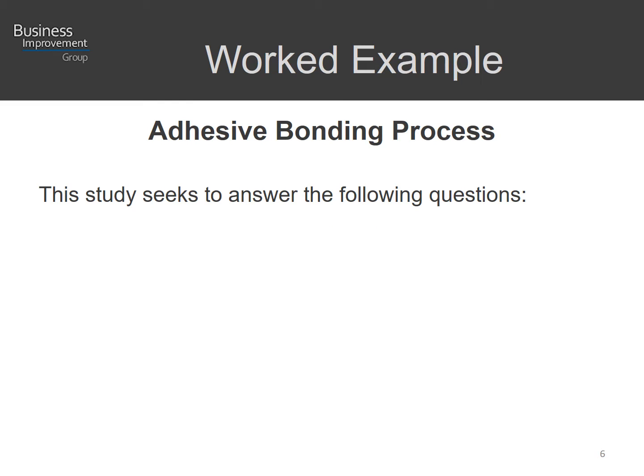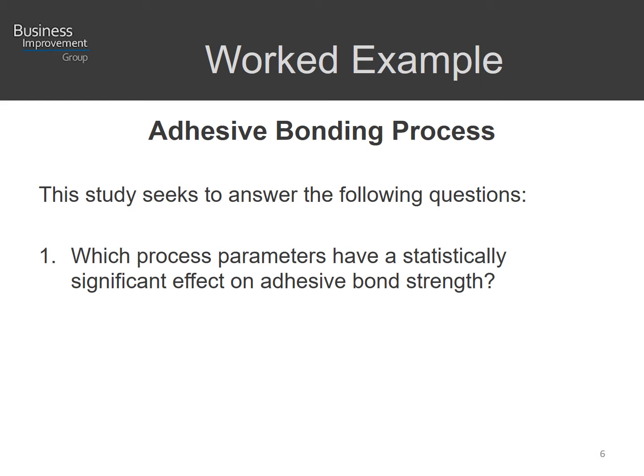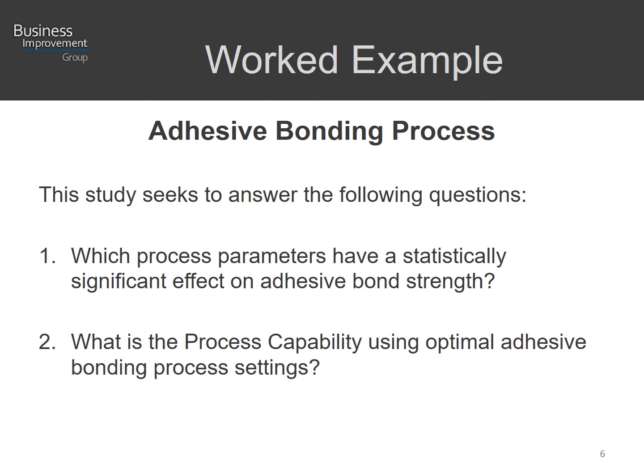The worked example used as the basis of this study is an adhesive bonding process, which is very common in the medical device industry. The study will seek to answer two questions: which process parameters have a statistically significant effect on the adhesive bond strength, and what is the process capability using optimal adhesive bonding process settings? We'll walk through the study to explore these two questions.